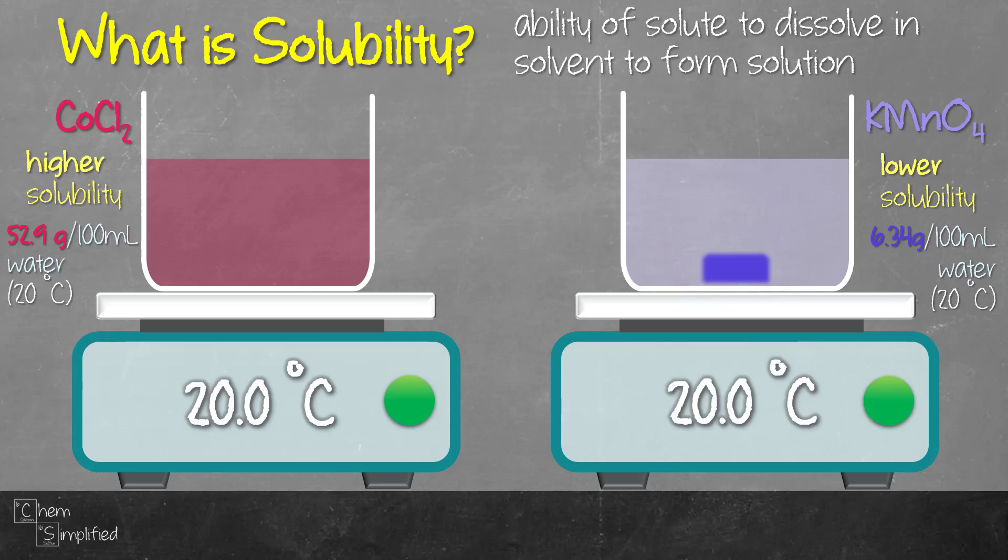Now notice that the solubility is presented in grams of solute over 100 ml of water, because water is our solvent in this case. Grams of solute over 100 ml of solvent is not the only unit. Here are some other units that are commonly used: grams of solute over 100 g of solvent, grams per liter, mole of solute over liter of solution, which is essentially the molarity. And there are other units as well like ppm, so on and so forth. So that's basically what solubility is.